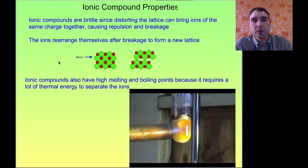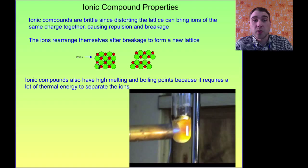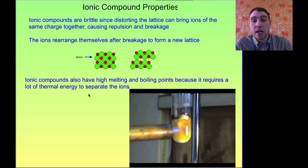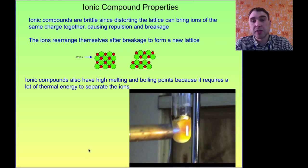Ionic compounds are very brittle. If you put stress on an ionic solid, you can get positive ions close to positive ions, and negative ions close to negative ions, causing repulsion. That section breaks off from the other, so they fracture easily. They also have high melting and boiling points because the attraction between positive and negative ions is very strong, requiring a lot of energy to break them apart.